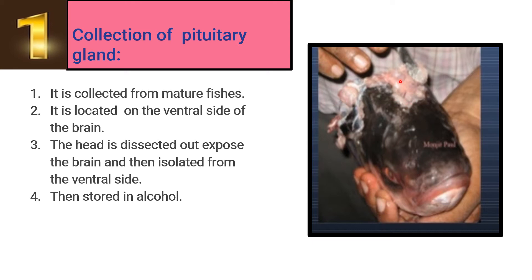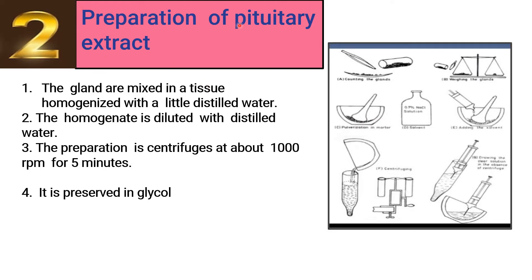The pituitary gland is located on the ventral side of the brain. To extract it, the brain is exposed and the pituitary gland is isolated from the ventral side. The pituitary gland is then stored in alcohol.